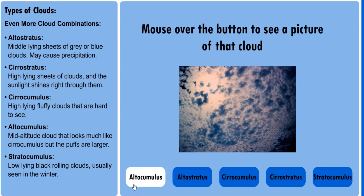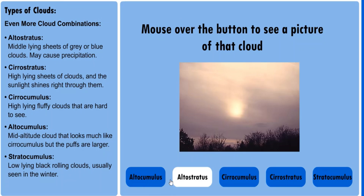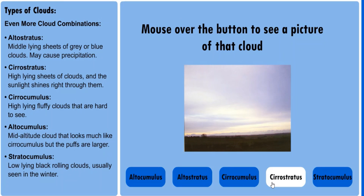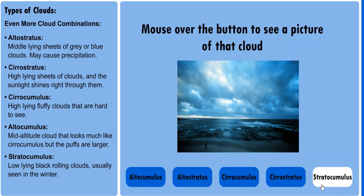Here are some other combinations we could have. Altocumulus, which we have described before. Altostratus, which is a blanket covering cloud found in the middle atmosphere. Cirrocumulus are very high up fluffy clouds that are very hard to see. Cirrostratus are very wispy high-lying clouds that cover the whole sky. And stratocumulus, which are your typical winter clouds, which are low-lying and rolling.